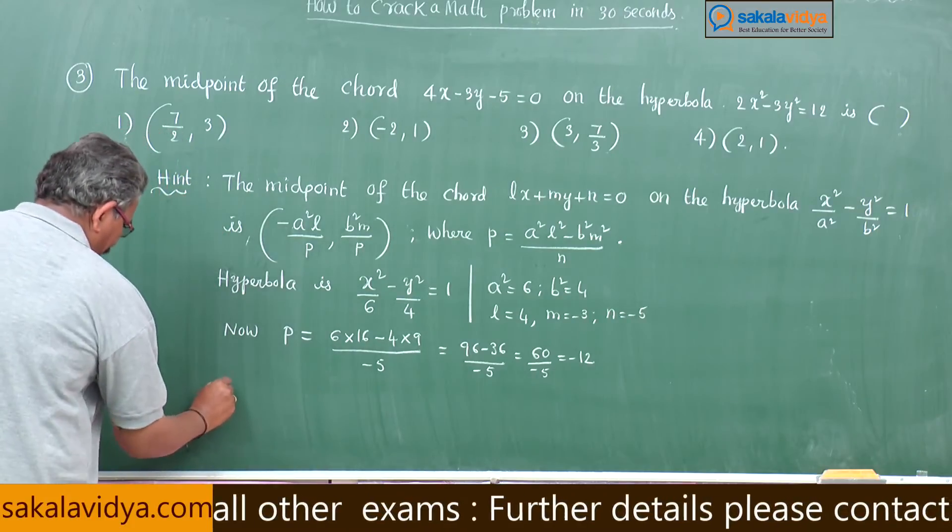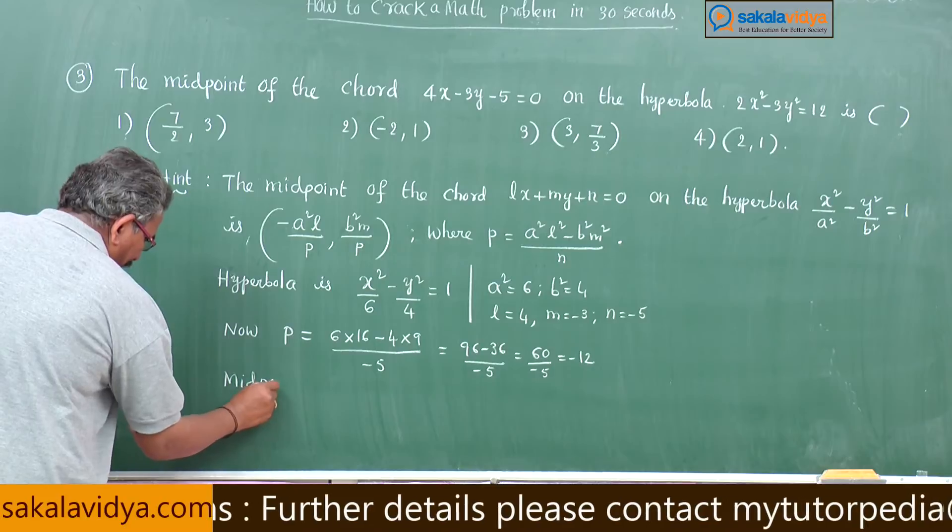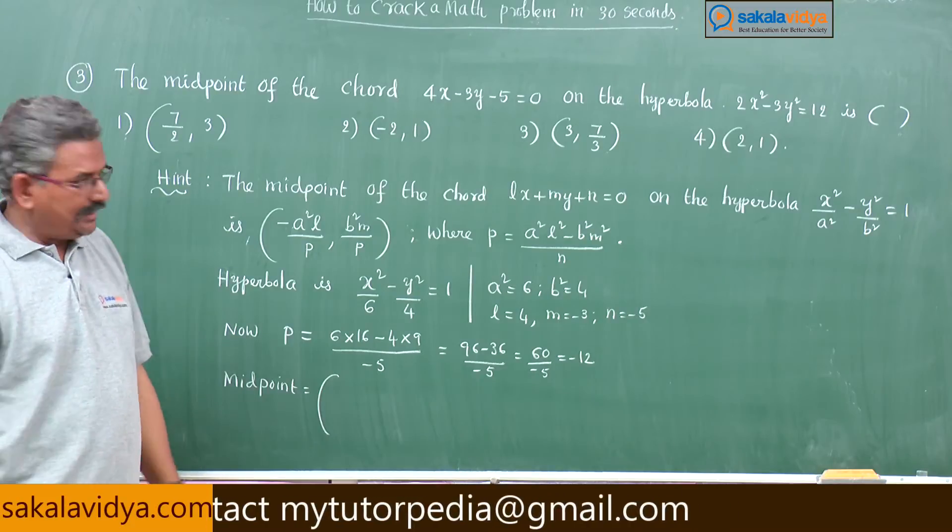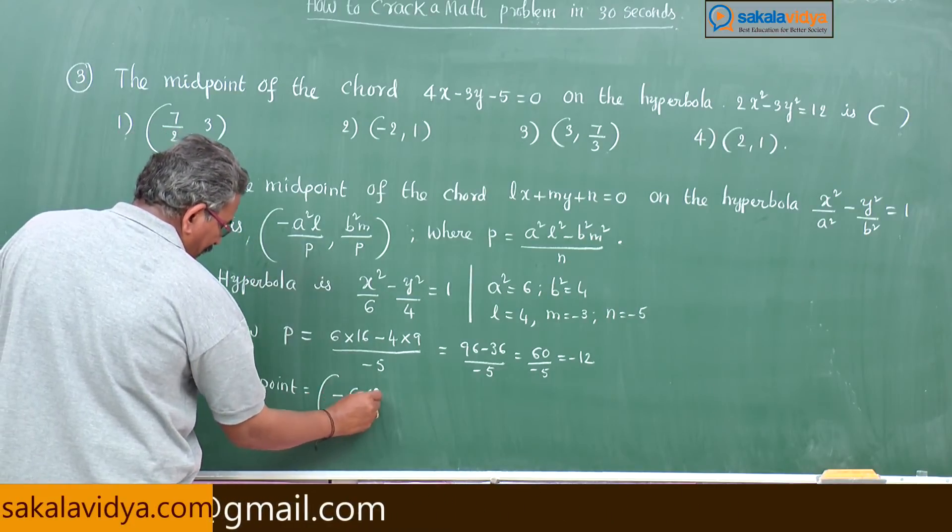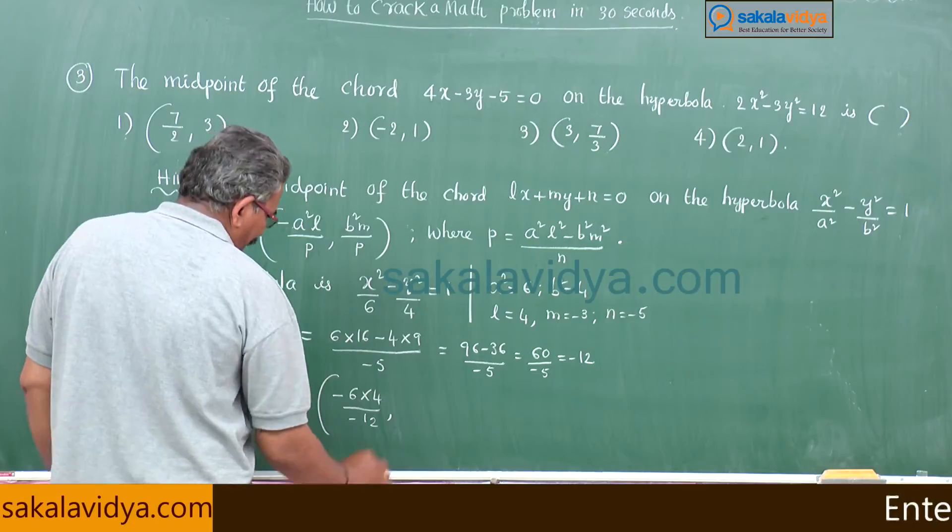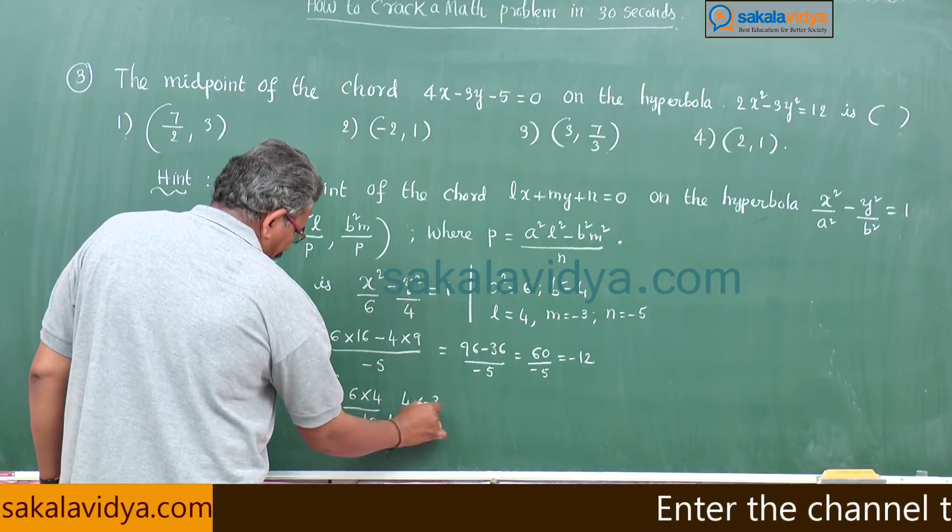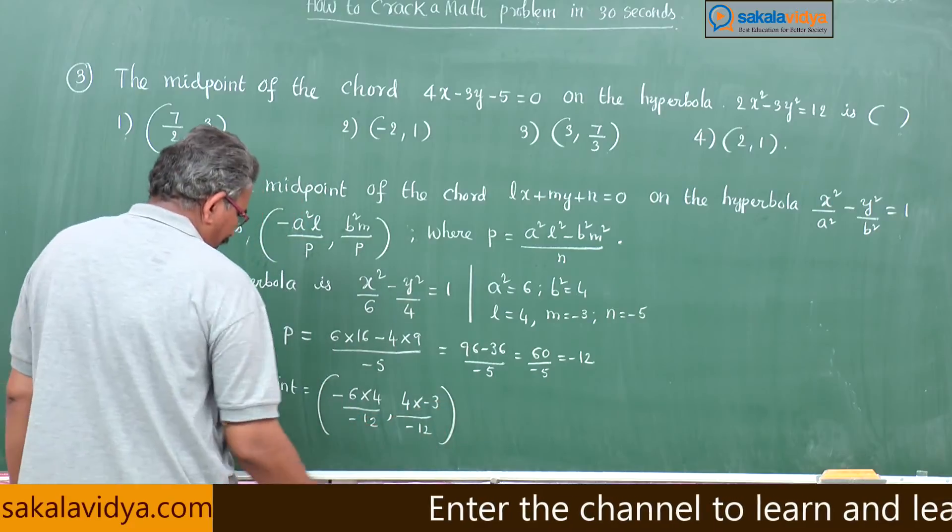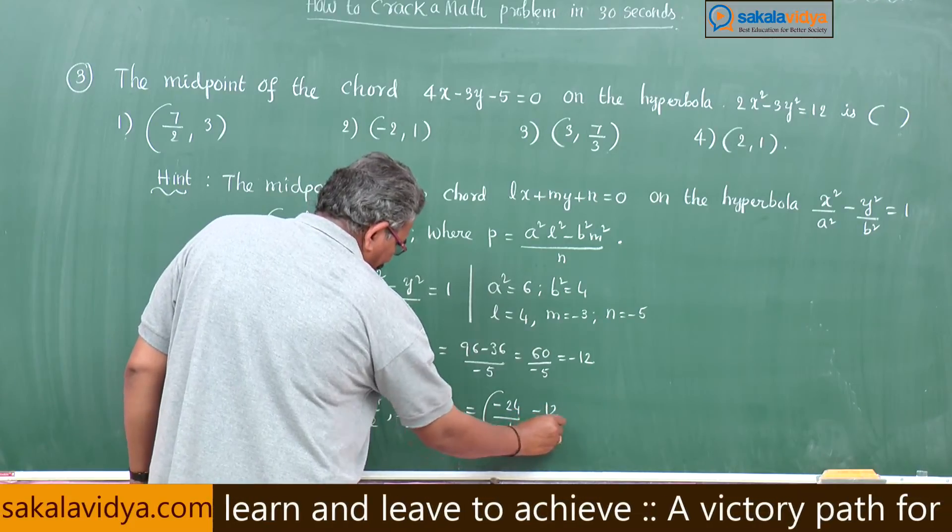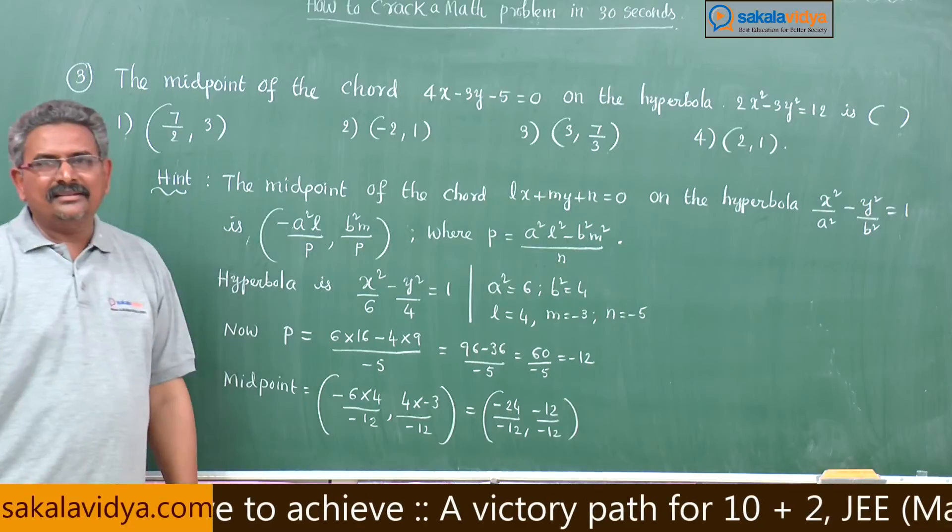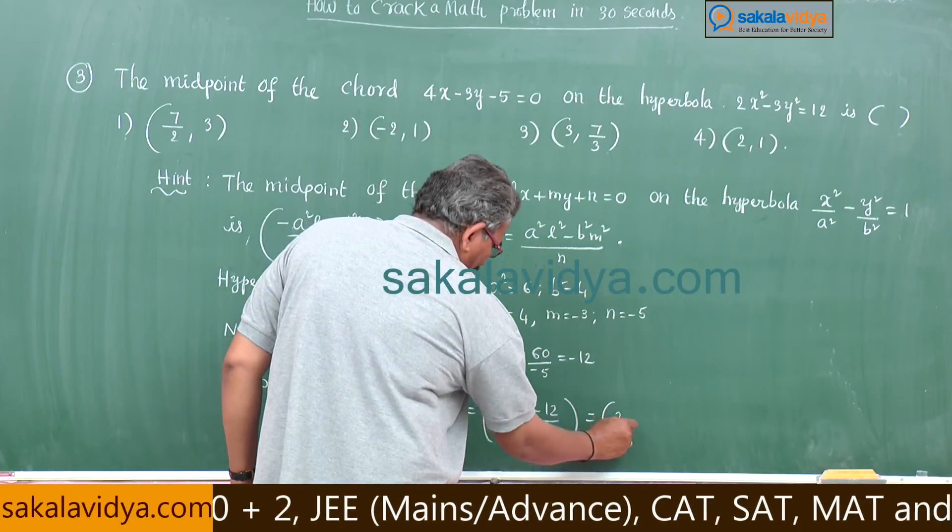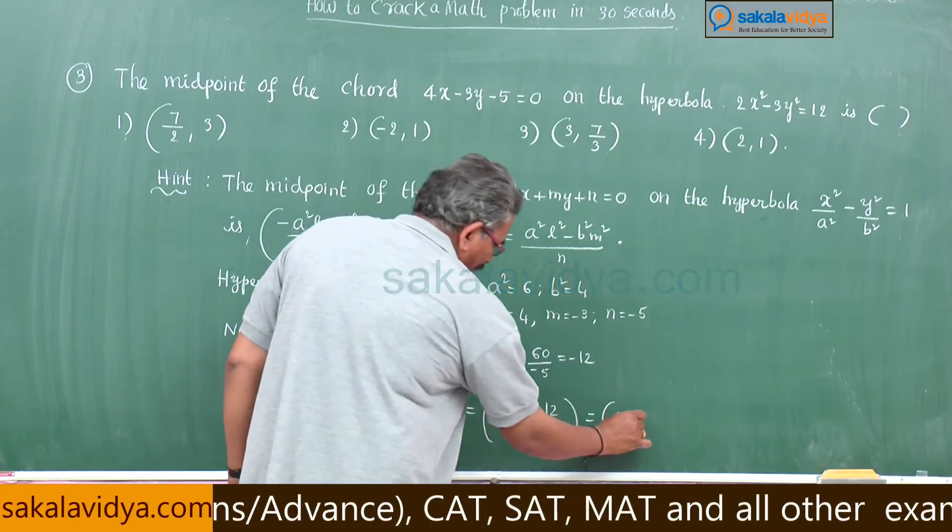Now let us come to the midpoint. Midpoint is given by the formula: minus a square l, minus 6 into l stands for 4 by minus 12. Next, b square is 4, m minus 3 by minus 12. So this is minus 24 by minus 12, minus 12 by minus 12. Do you expect the answer? Yes, why not? Very simple: minus minus cancel, 12 goes 12 twice, 2 comma, minus minus cancel, 12 goes 12 once, 1. 2 comma 1. I already told you.